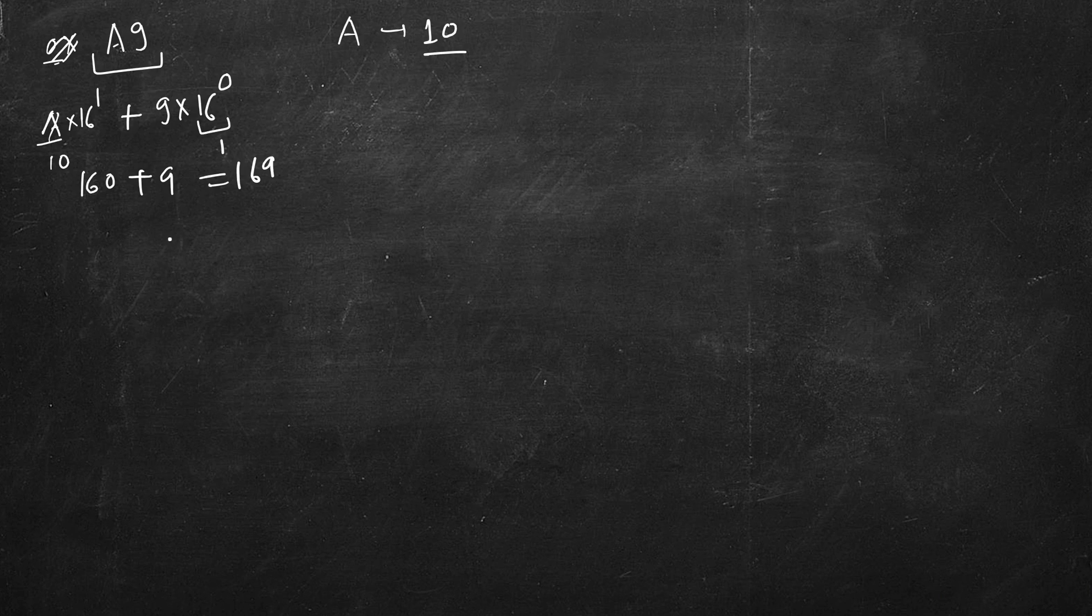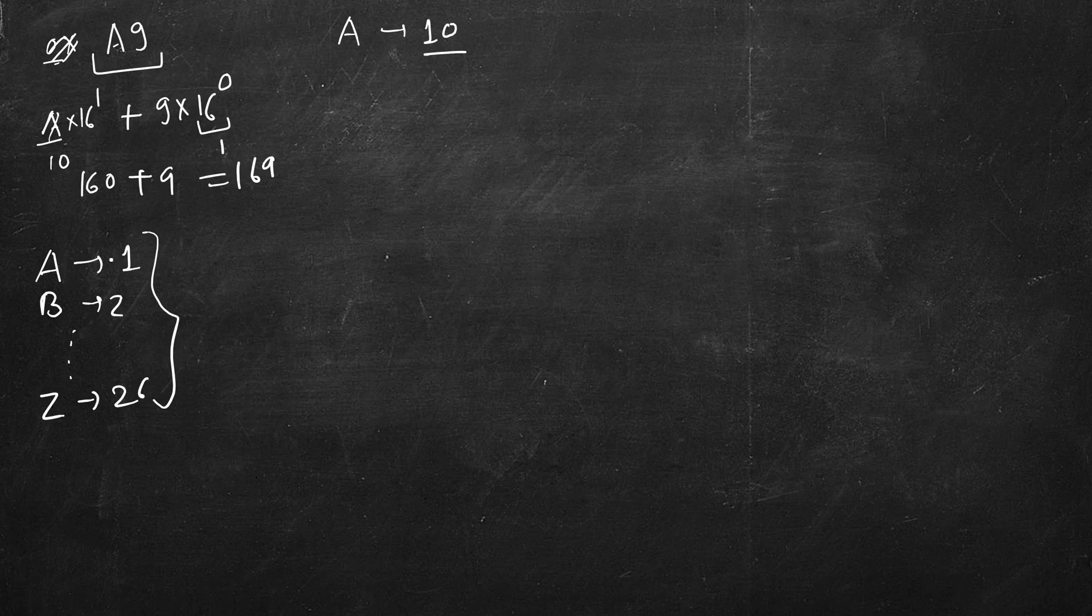In this case we will again be given a column number. For example, column numbers are A mapped to 1, B mapped to 2, all the way up to Z which is mapped to 26. So here there is no 0, it's starting from 1, so there is an offset of 1. Then after Z we have AA.